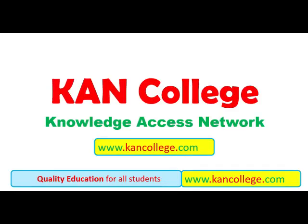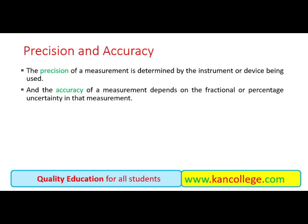Bismillah ar-Rahman ar-Rahim. Aaj hem precision and accuracy ko discuss karenge. Sab se pehle kuch alfaz pe nazar karte hain, wording dekh lete hain, us ke baad isko samajh lete hain. The precision of a measurement is determined by the instrument or device being used, and accuracy of a measurement depends on the fractional or percentage uncertainty in that measurement.